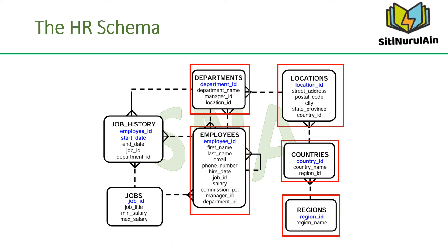Employees contains details about each employee working for a department. Some employees may not be assigned to any department. Jobs contains the job types that can be held by each employee. Job_history contains the job history of the employees. If an employee changes departments within a job or changes jobs within a department, then a new row is inserted into this table with the earlier job information of the employee.